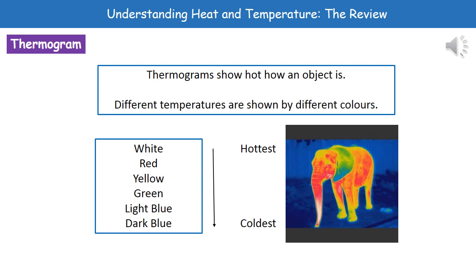One way we can actually observe these different temperatures of objects is by using something called a thermogram. Now, a thermogram is a special kind of picture that we can take using a special camera that then shows us how hot an object actually is. And it does this through representing them with different colors. So what we can see there on the right hand side is a picture of an elephant then taken with one of these thermal imaging cameras that's created our thermogram.